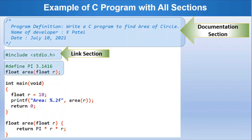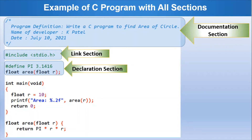This is the declaration section where we define the symbolic constant PI with the value 3.1416. We also declare a function prototype: float area(float r). Under the declaration section, we declare symbolic constants, function prototypes, as well as global variables if required.